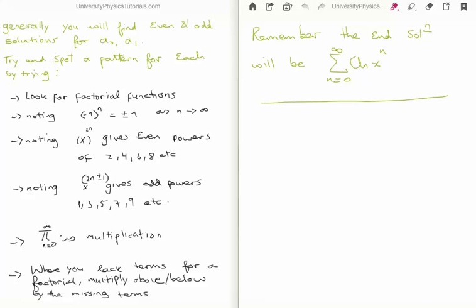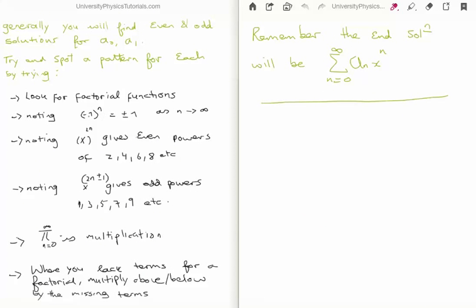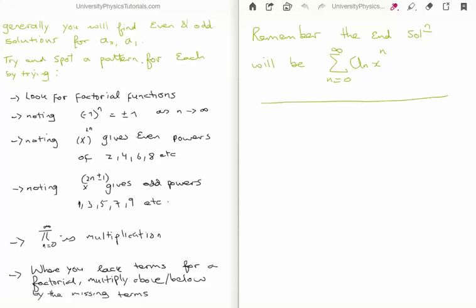You will generally get an even and odd solution — one for a sub 0 and one for a sub 1 — and these two coefficients determine everything else. We try to spot a pattern, first looking for factorials. Even on a sub 4 we already have 4·3·2·1 on the denominator, which looks like n factorial on the bottom. Factorials are everywhere when solving these differential equations. Also note that (−1)^n gives us a plus or minus sign — so we oscillate between positive and negative. Looking at the pattern: a sub 2 is negative, a sub 4 is positive, so a sub 6 will be negative again, requiring a factor of (−1)^n.